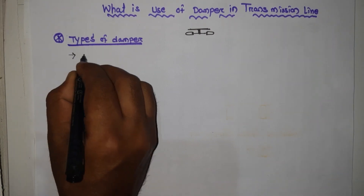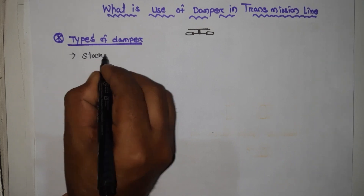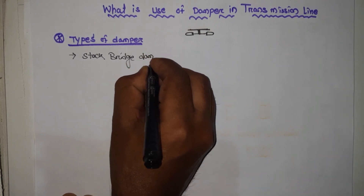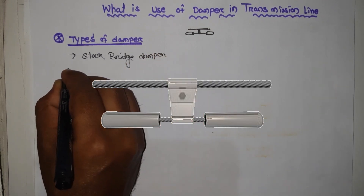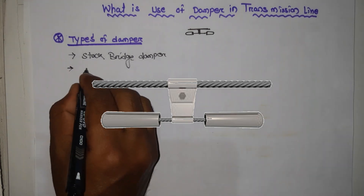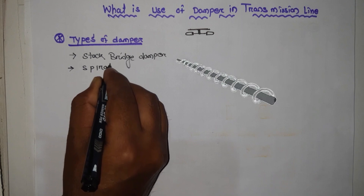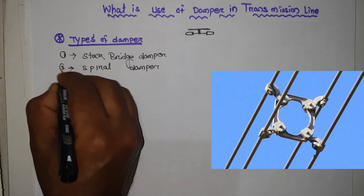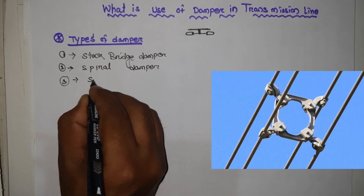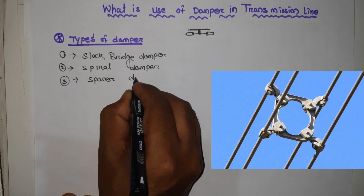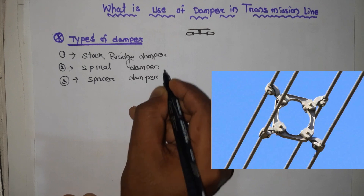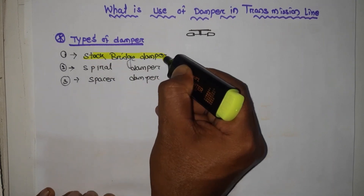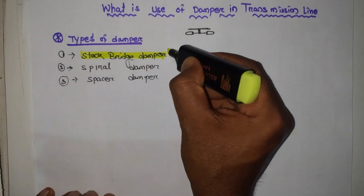The first type is the Stockbridge damper. The second one is the spiral damper. And the third one is the spacer damper. The Stockbridge damper is mostly and widely used in the transmission line.